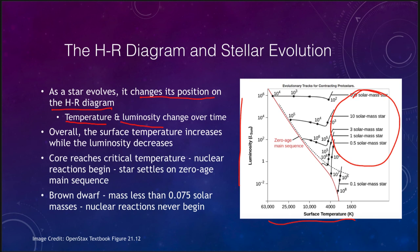However, unlike red giants, these protostars are buried within nebulae and very hard to see with regular telescopes. The surface temperature increases much more for a very high-mass star, going up to tens of thousands of degrees, while for a low-mass star it may only increase by a few hundred degrees. In general, the temperature will increase and the luminosity will decrease.